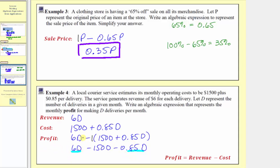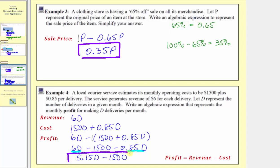So the expression for the profit is 5.15d minus 1,500. This 5.15 came from 6 minus 0.85. So this is the simplified expression for the profit. I hope you found this helpful.